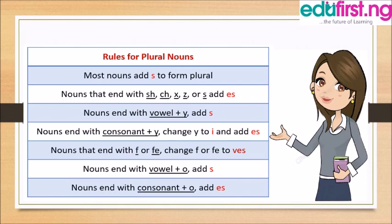You can also form the plural by changing words that end with -sh, -ch, -x, -z, or -s to -es. For example, fish becomes fishes, church becomes churches, kiss becomes kisses, box becomes boxes.